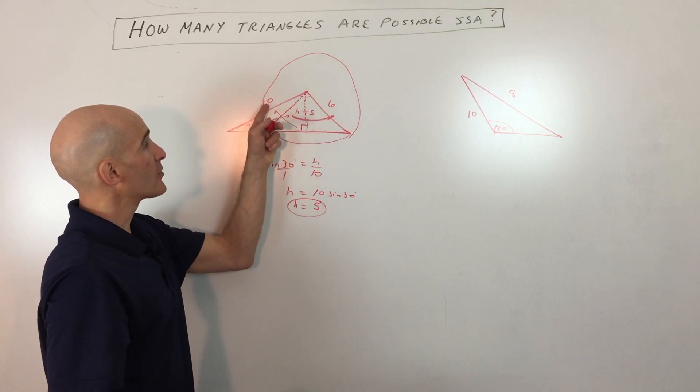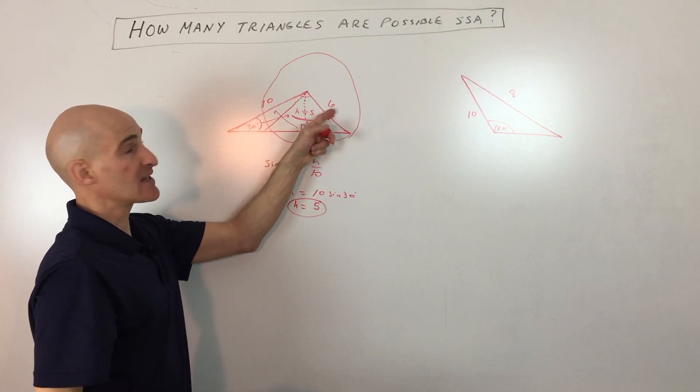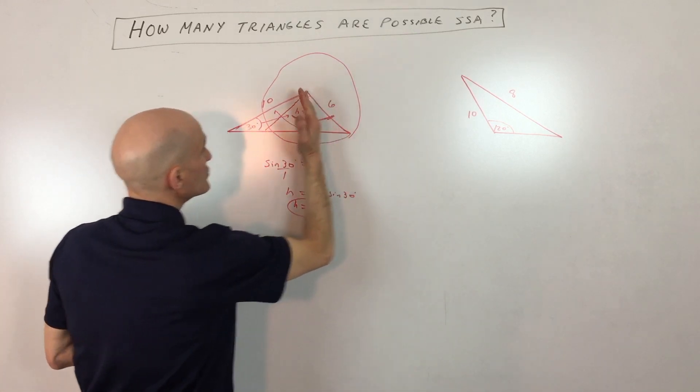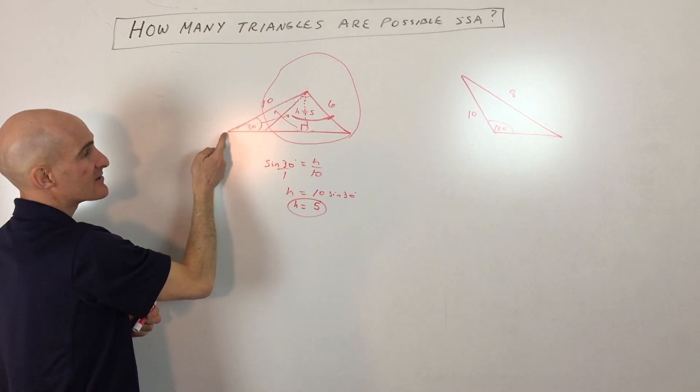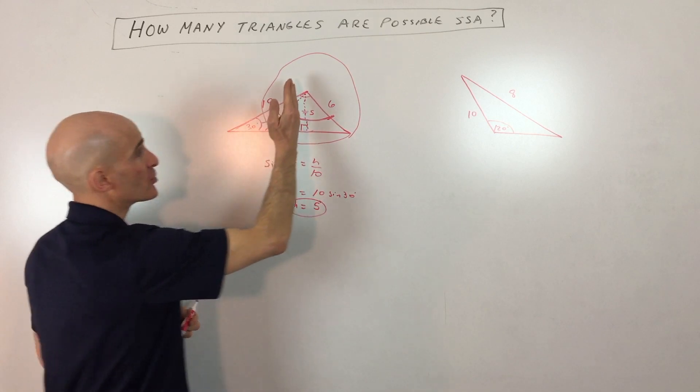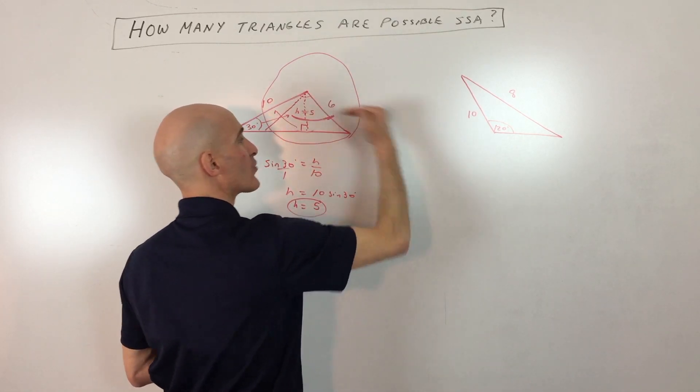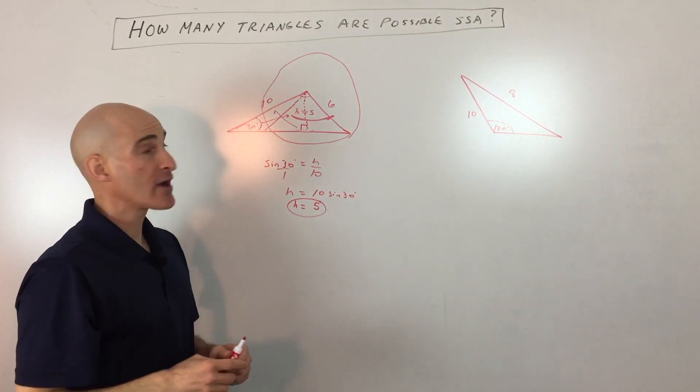If this side here is longer than the side adjacent to this acute angle, like if this was 11, when you rotate it, it would extend past this side. So you could only rotate it out to the right like that, giving just one triangle possible.